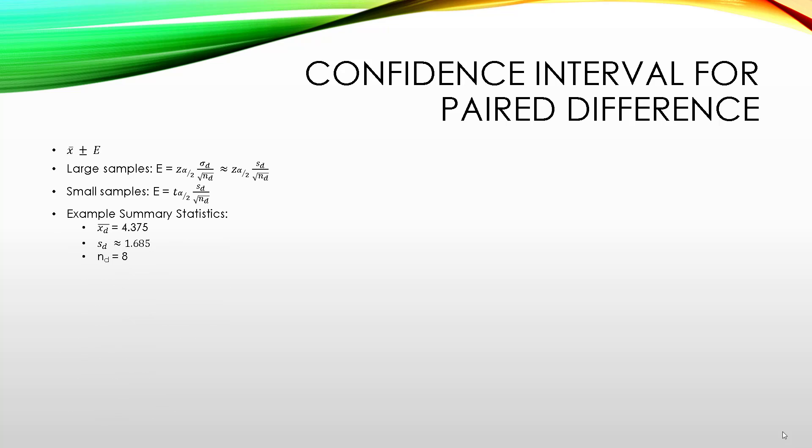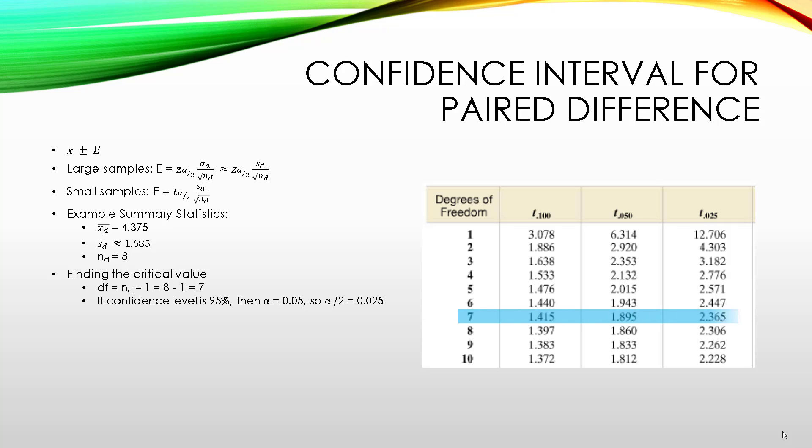Alright, so these were our sample statistics from before on the differences. Our degrees of freedom is the same as before, 7. Our confidence level is 95%, which means alpha would be 5%. So alpha over 2, because remember confidence intervals are two-tailed, would be half of that, so 0.025. Looking at the t-table, we still go down the seventh row, but now we go down the 0.025 column, since it's two-tailed. So plug that into the formula, our margin of error is going to be 2.365 times the standard deviation, 1.685 over the square root of n, which is approximately 1.4. So add and subtract that from the sample mean difference, and we get 2.966 to 5.784 as our confidence interval.